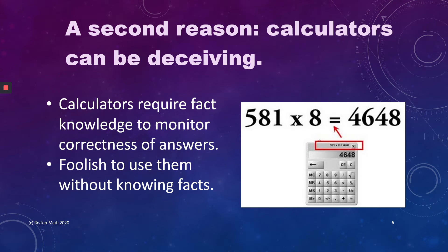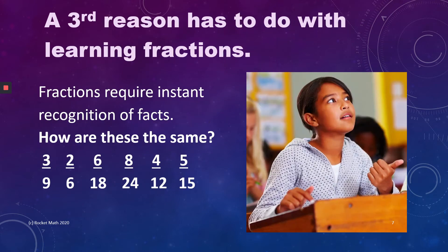The second reason students need math facts automaticity is because they often use calculators, and calculators can be deceiving. When you use a calculator, you have to know your facts in order to know when you have made an entry error and you have an incorrect answer. It's foolish to use a calculator if you don't know the facts and can't tell when your answer is way off.